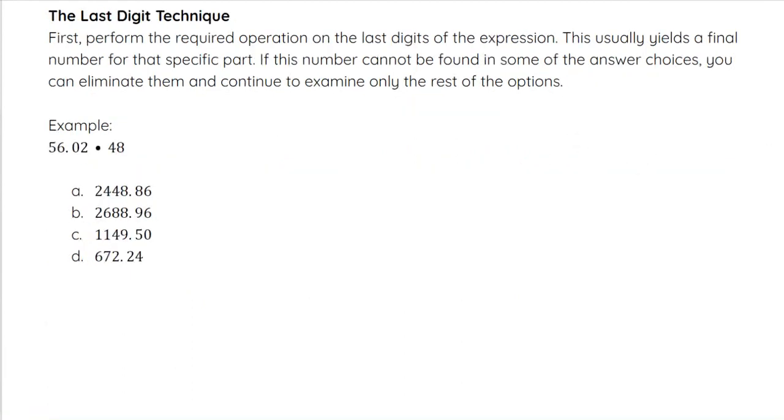Our next technique is a type of elimination called the Last Digit Technique. First, you will perform the required operation on the last digits of the expression. For example, if we are looking at 56.02 times 48, you're going to take the last digit in each of these numbers and perform the indicated operation, which is multiplication. So you're going to do 2 times 8.